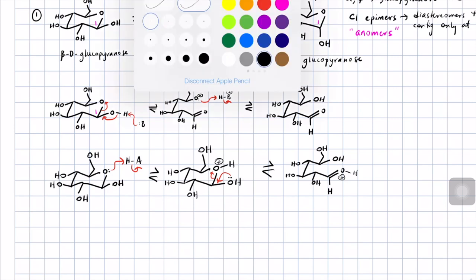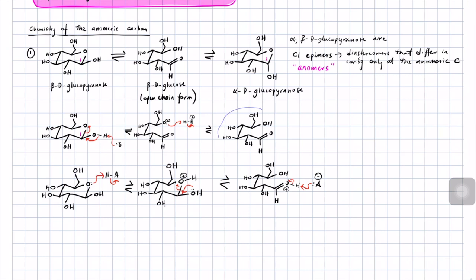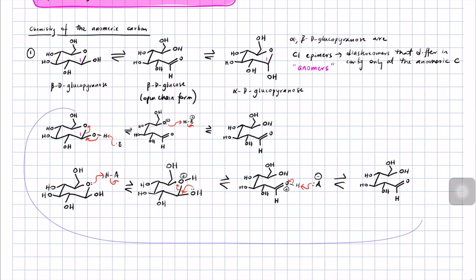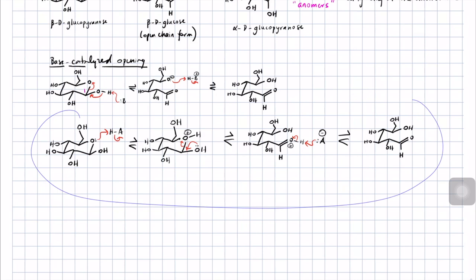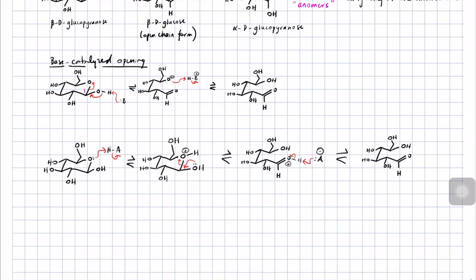That would give you this oxonium ion, which could be deprotonated by the conjugate base of our acid to give us the open-chain form. Then we could go backwards and reform the cyclic hemiacetal — only have it form with the OH group on C1 pointing down — and that would form the alpha anomer. So this would be a base-catalyzed opening, and if you do the closing in reverse, you could get the other anomer. Below that we would have acid-catalyzed opening.